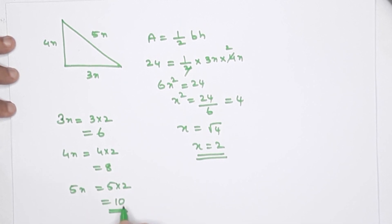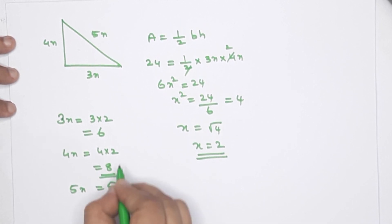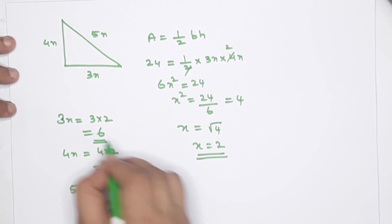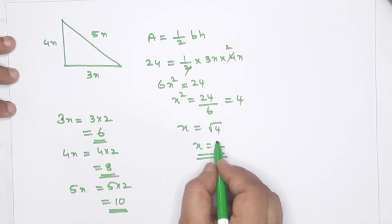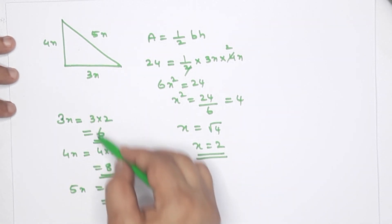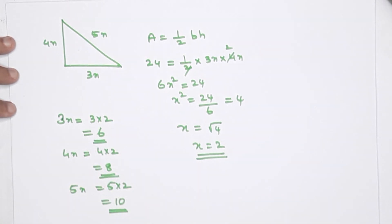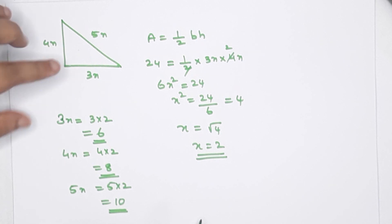Then we have the area. So here we have all the sides and the ratio for the right angle triangle problems.